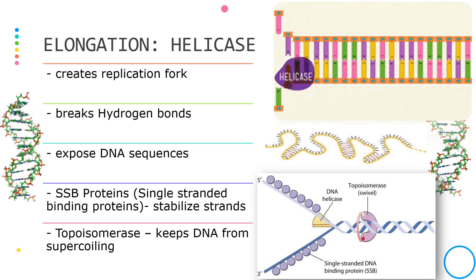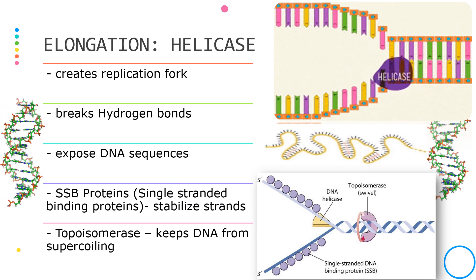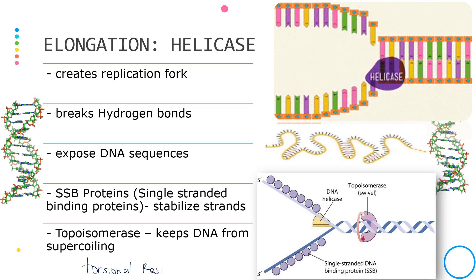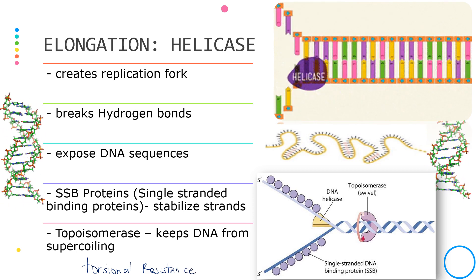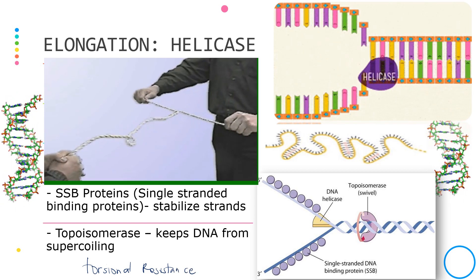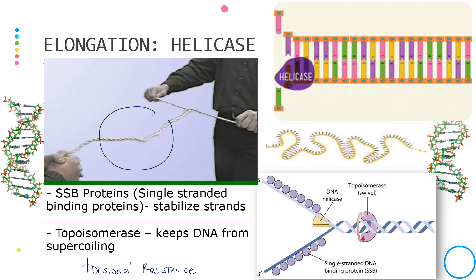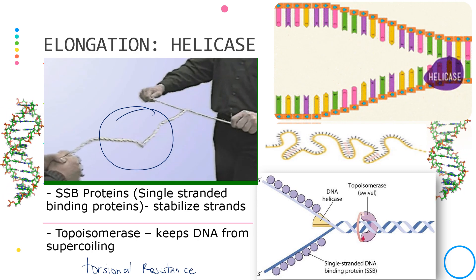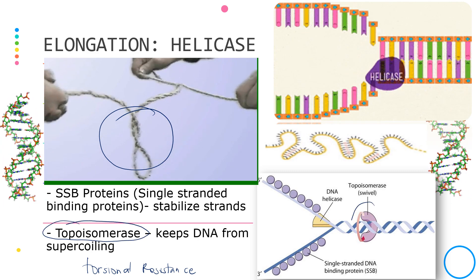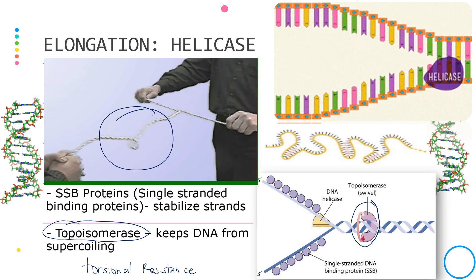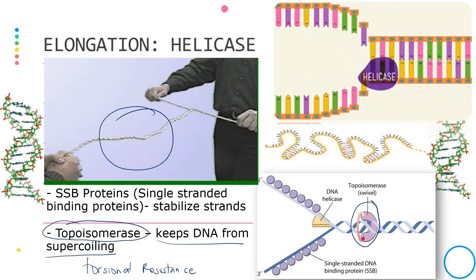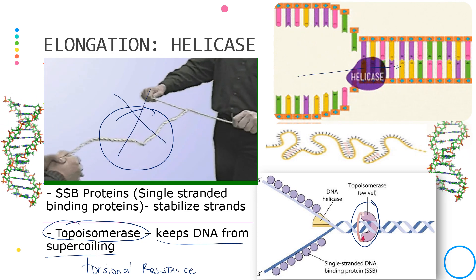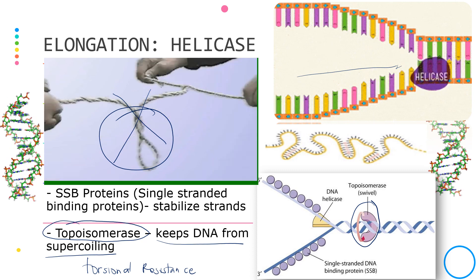Another problem that may occur during this step is torsional resistance, which builds up as the helicase tries to unwind the DNA, creating tension in the upper strand. To prevent supercoiling, the enzyme topoisomerase acts ahead of the helicase so the DNA does not supercoil as unwinding progresses.